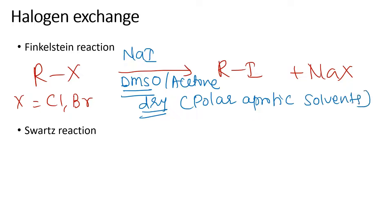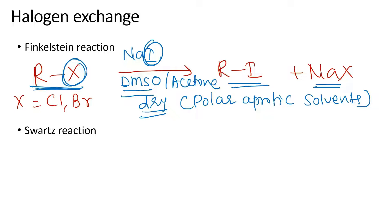So you can see here: this is one alkyl halide where one halide is exchanged for the other, and the respective by-product is formed. Now, how is the Swartz reaction done? That is also halogen exchange.